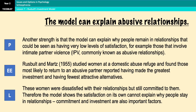Another strength of Rusbult's investment model is that it can explain why people remain in relationships with very low levels of satisfaction, such as abusive relationships. In 1995, Rusbult and Martz studied women at a domestic abuse refuge and found that those most likely to return to an abusive partner were those who reported having made the greatest investments and having the fewest attractive alternatives. All of these women were dissatisfied, yet still committed due to their level of investment, showing that satisfaction alone cannot explain why people stay in relationships.